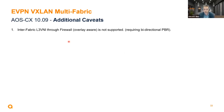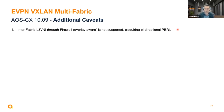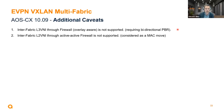We do not support inter-fabric layer 3 VNI routing through a firewall, as that would require bidirectional policy-based routing. For outgoing packets that would be okay, but for returning packets we would need orchestration to match the right firewall, which is not available. For an inter-fabric pure layer 2 VNI solution with an active-active firewall doing layer 3, this is not supported because it would be considered a MAC move — the firewall MAC would be the same on both DCs.